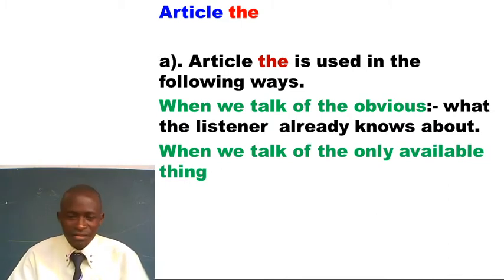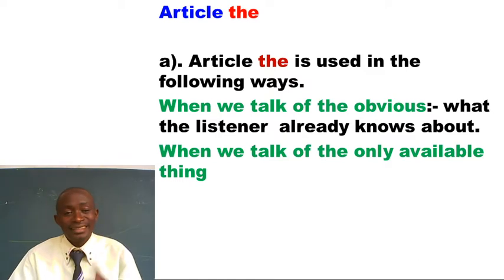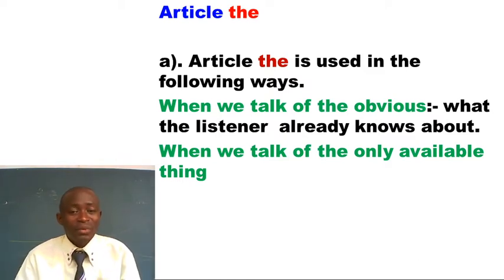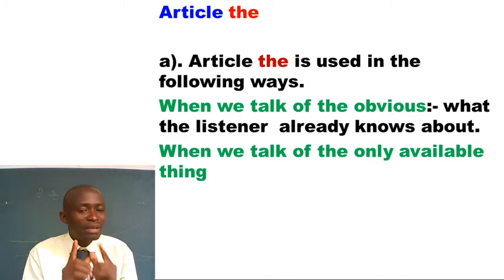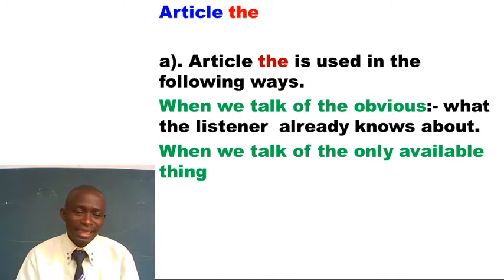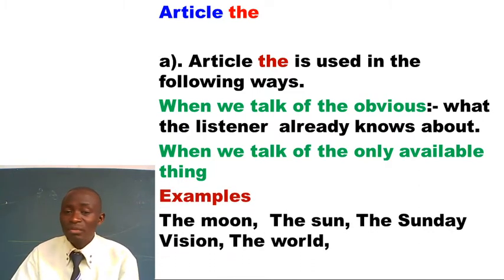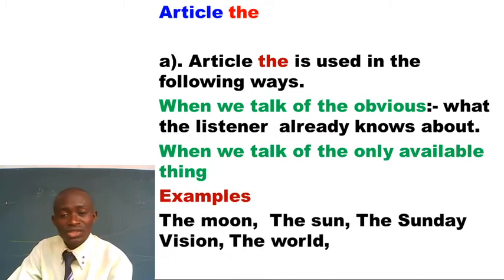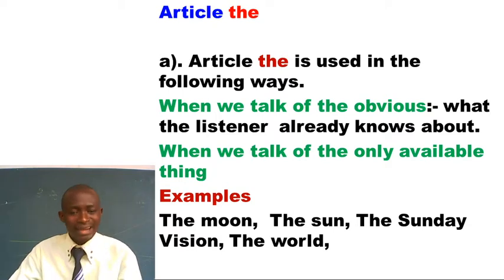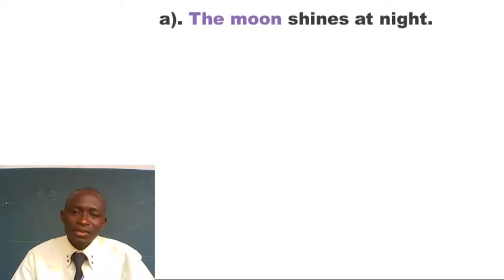We also use article THE when we talk about the only available thing. For example: the sky, the sun, the earth. We also have only things in the country, like the newspaper — which one? The Sunday Vision newspaper. Examples of these words are: the moon, the sun, the vision, the world.